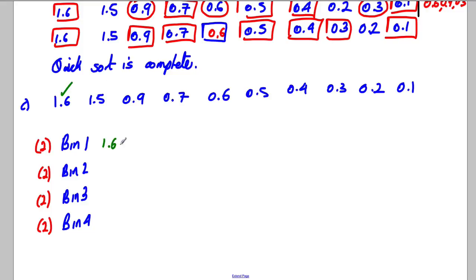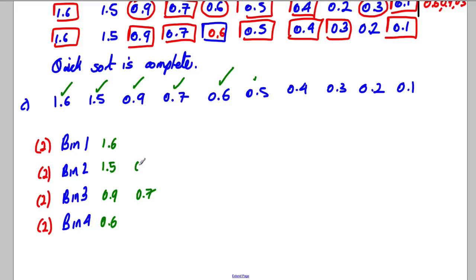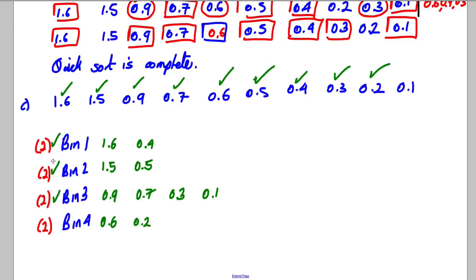1.6 goes in bin 1. 1.5 can't fit in bin 1, so it goes in bin 2. 0.9 can't fit in bin 1 (only 0.4 space) or bin 2 (only 0.5 space), so it goes in bin 3. 0.7 can't fit in bin 1, 2, or 3, so it goes in bin 4. 0.6 can't fit in bins 1, 2, or 3 either (bin 3 would reach 2.2), so 0.6 goes in bin 4. 0.5 fits in bin 2, completing it. 0.4 fills bin 1 completely. 0.3 goes in bin 3 to give 1.9. 0.2 fits in bin 3. 0.1 completes bin 3 — giving three complete bins and a fourth bin.